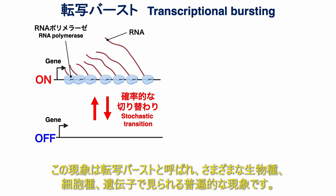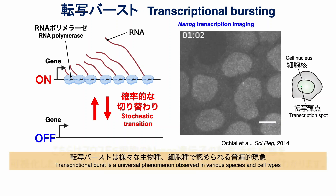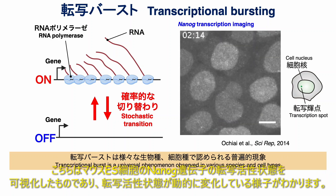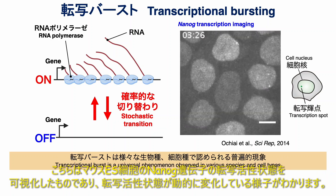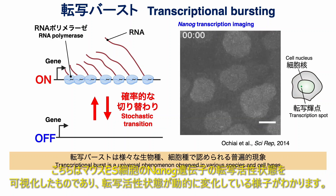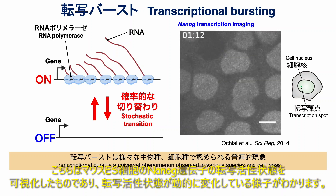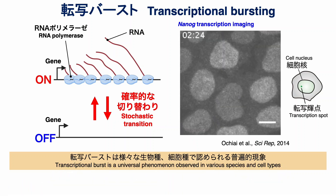This phenomenon is called transcriptional bursting and is a universal phenomenon observed in various species, cell types, and genes. The video presented here visualizes the transcription on-state of the Nanog gene in mouse embryonic stem cells, clearly showing the dynamic changes in transcriptional activity.